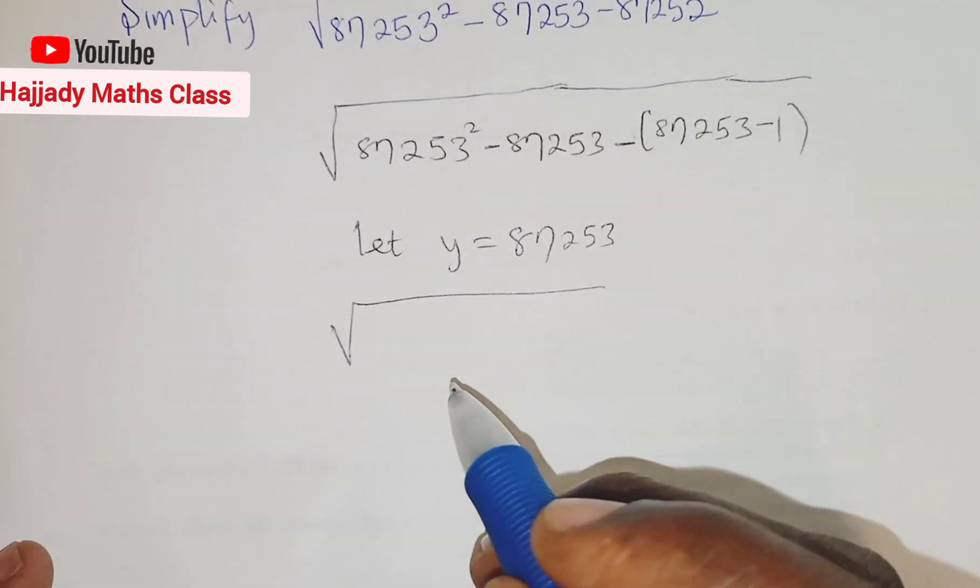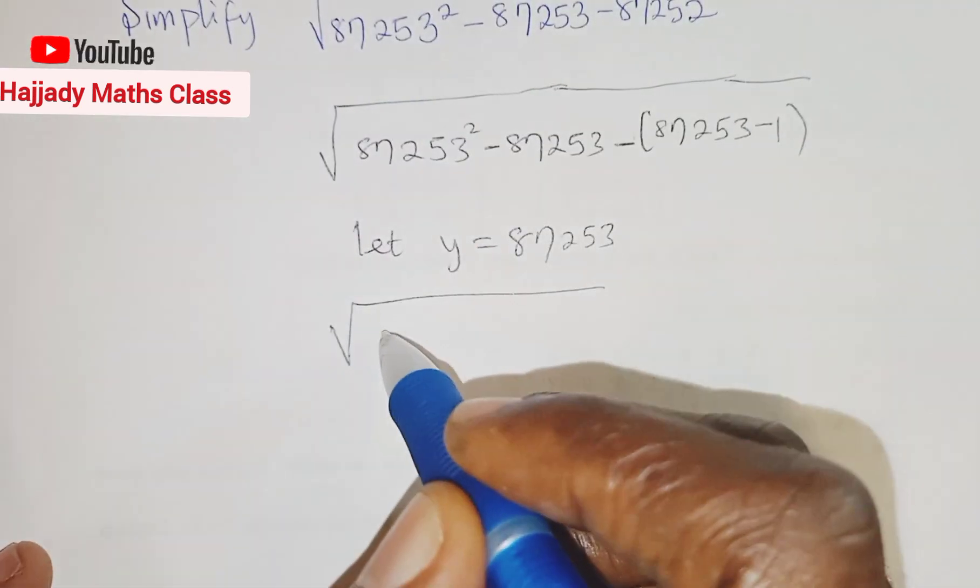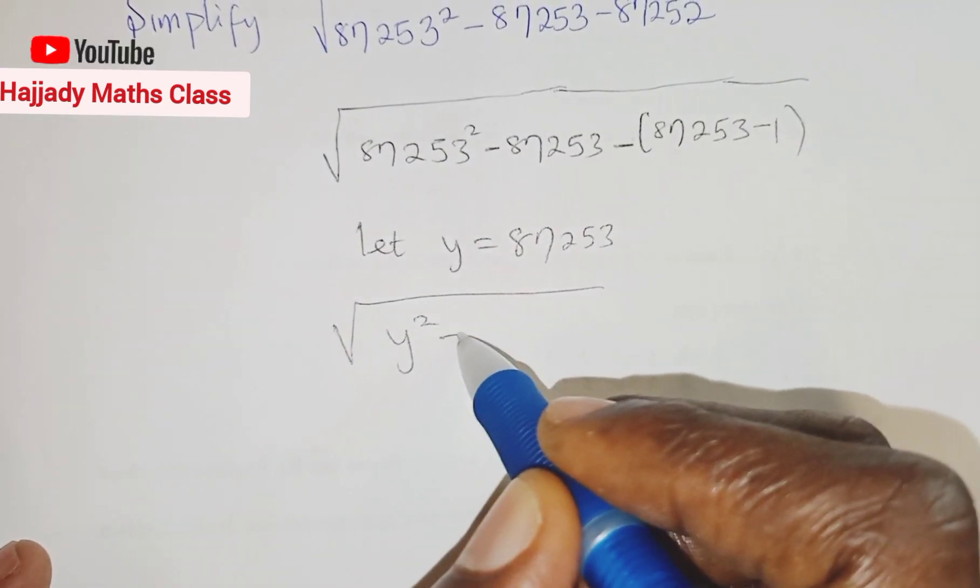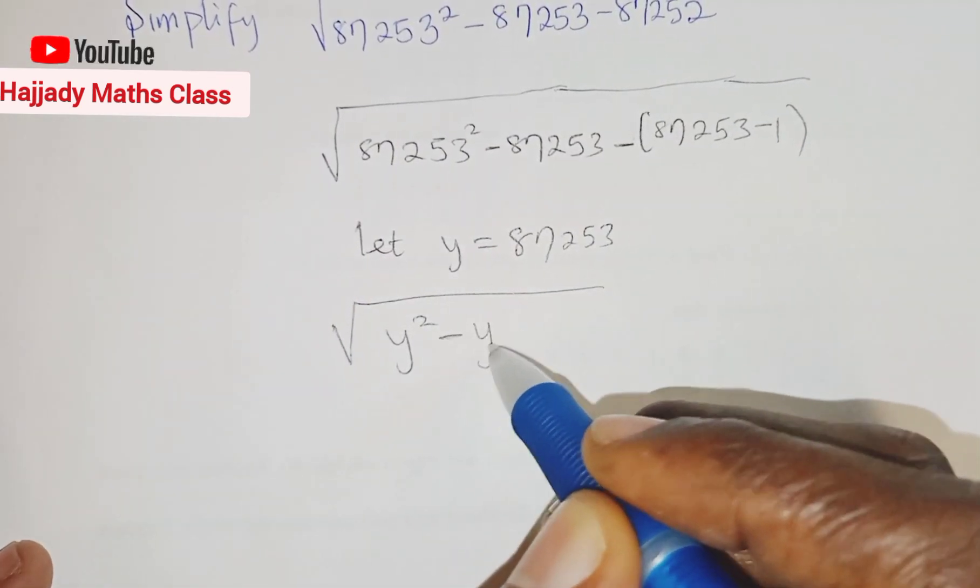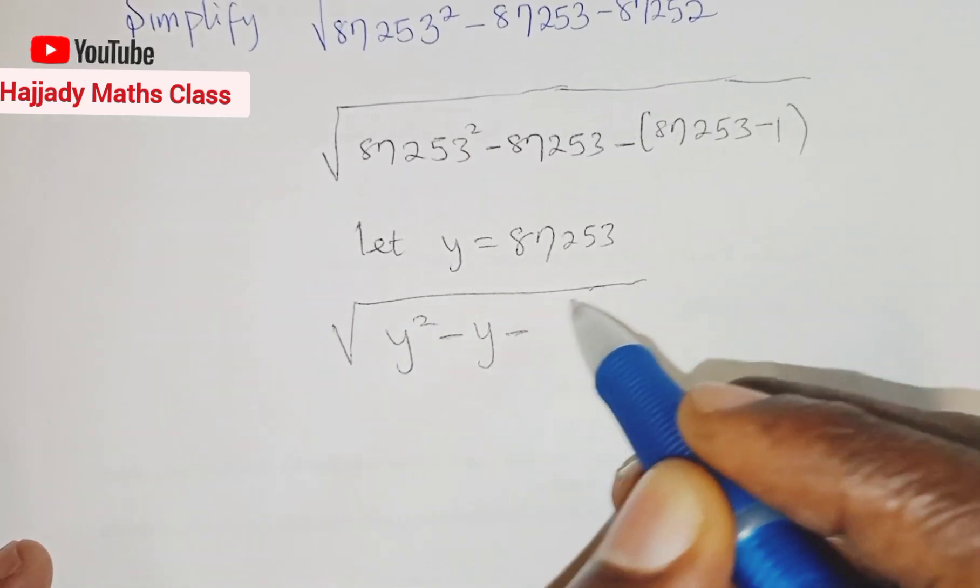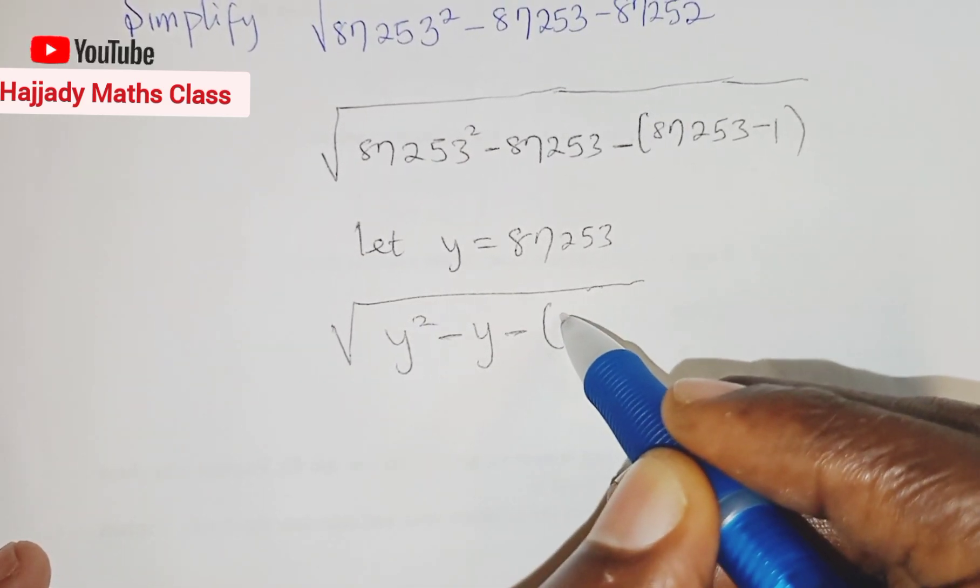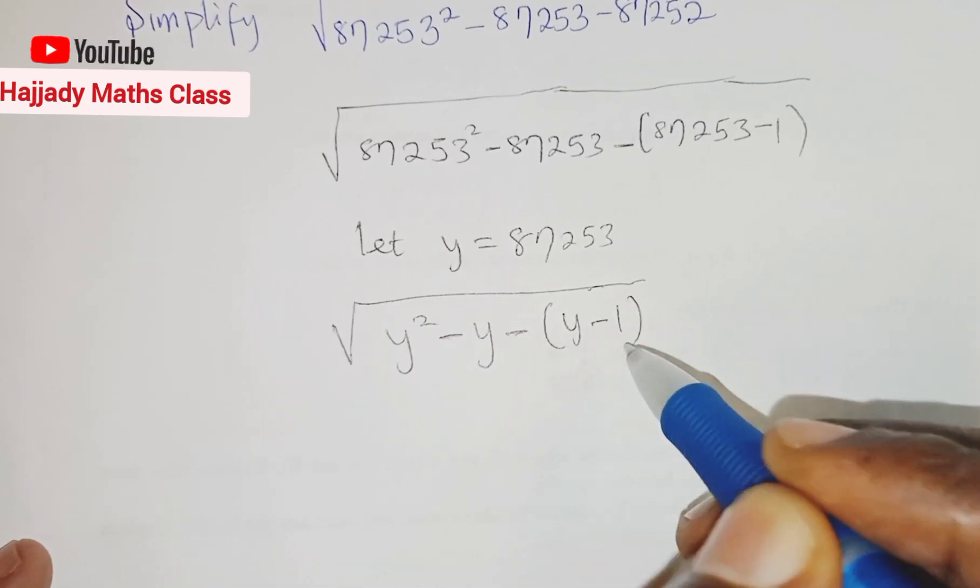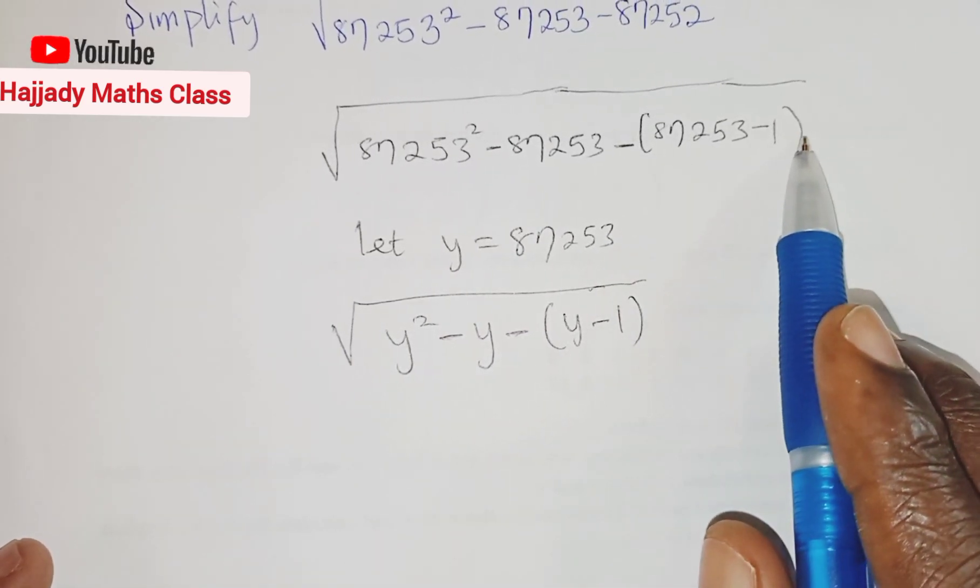So with this, we have, this is now going to be y raised to power 2 minus y minus, into brackets, we have y minus 1. This is y minus 1.